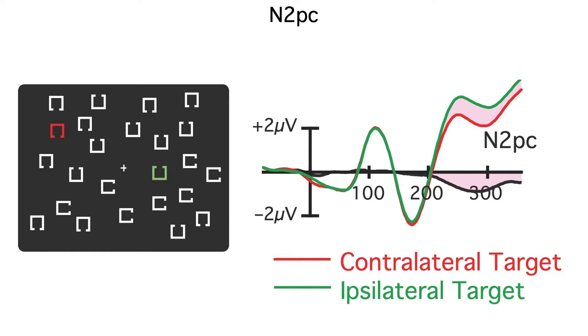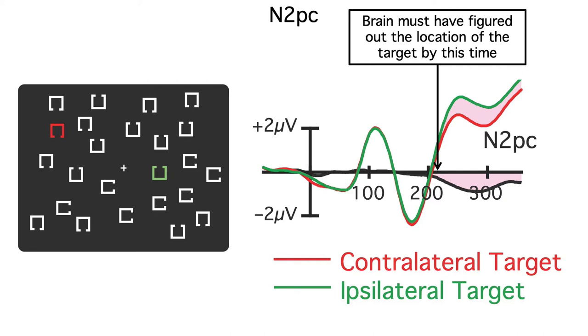Logically, the voltage can't be more negative over the contralateral hemisphere than over the ipsilateral hemisphere until the brain has determined whether the target is on the left or the right side of the display. So, if you look at a contra minus ipsi difference wave, you can know that the brain has localized the target by the time the difference wave deviates from zero.